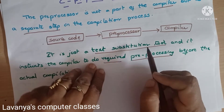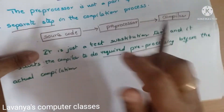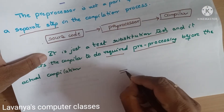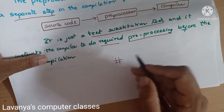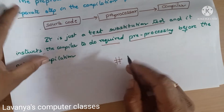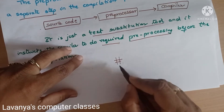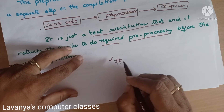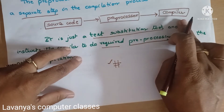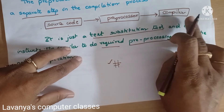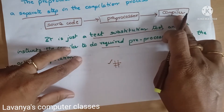It is just a text substitution tool. Pre-Processors always start with the hash symbol. Any line starting with hash is called as a Pre-Processor Directive. It is a Pre-Processor directive — not a part of the compiler.